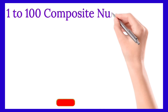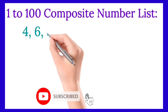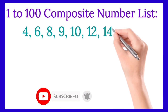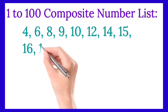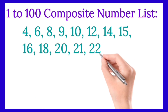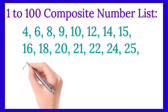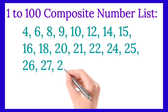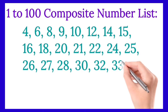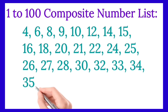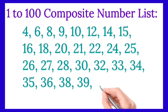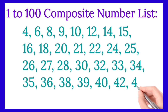1 to 100 composite number list: 4, 6, 8, 9, 10, 12, 14, 15, 16, 18, 20, 21, 22, 24, 25, 26, 27, 28, 30, 32, 33, 34, 35, 36, 38, 39, 40, 42, 44, 45, 46, 48, 49, 50.